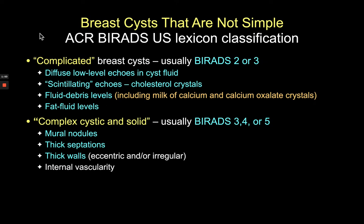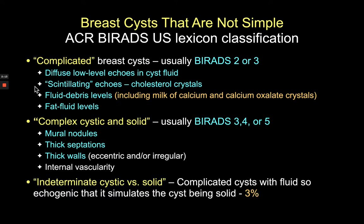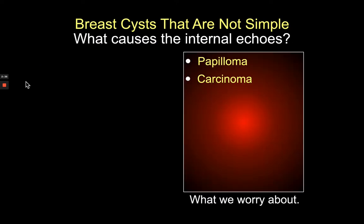We no longer say 'complex cystic masses' — we call them complex cystic and solid masses. These can be BI-RADS 3 but are more likely to be BI-RADS 4 or 5. Complex cystic and solid masses are described as such by virtue of having mural nodules, thick septations, or irregular wall thickness. About 3% of the time, we still can't determine whether we have a complicated cyst or a solid mass.